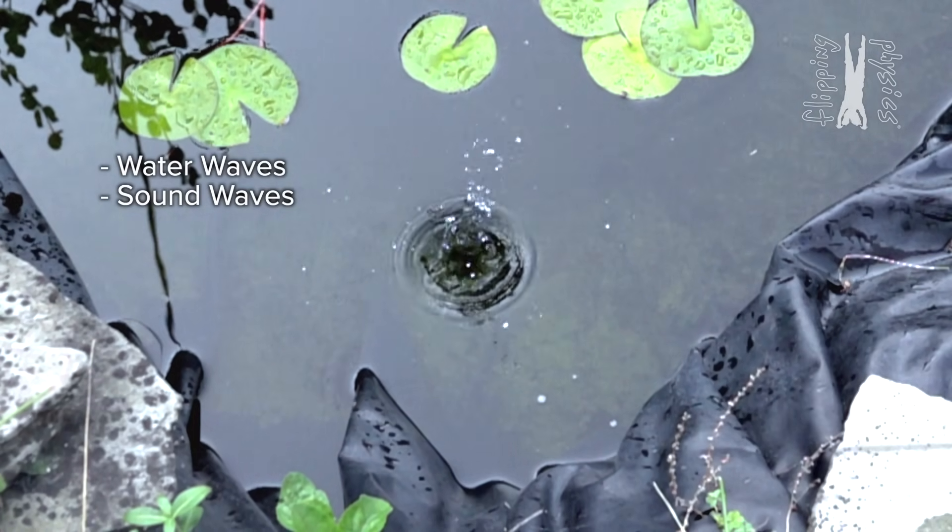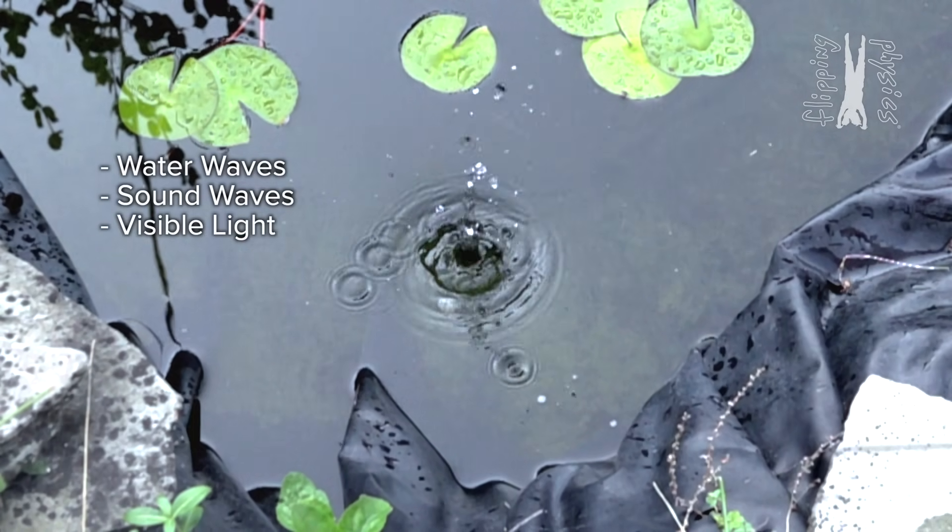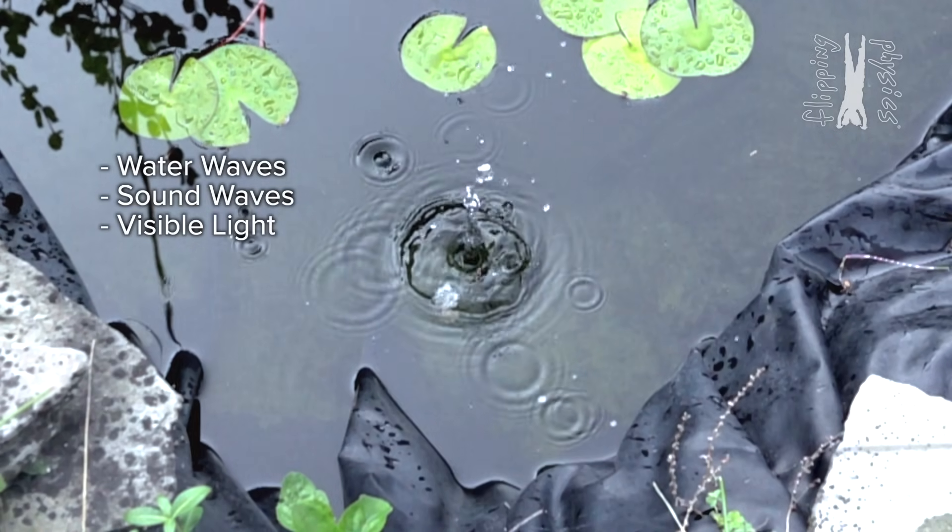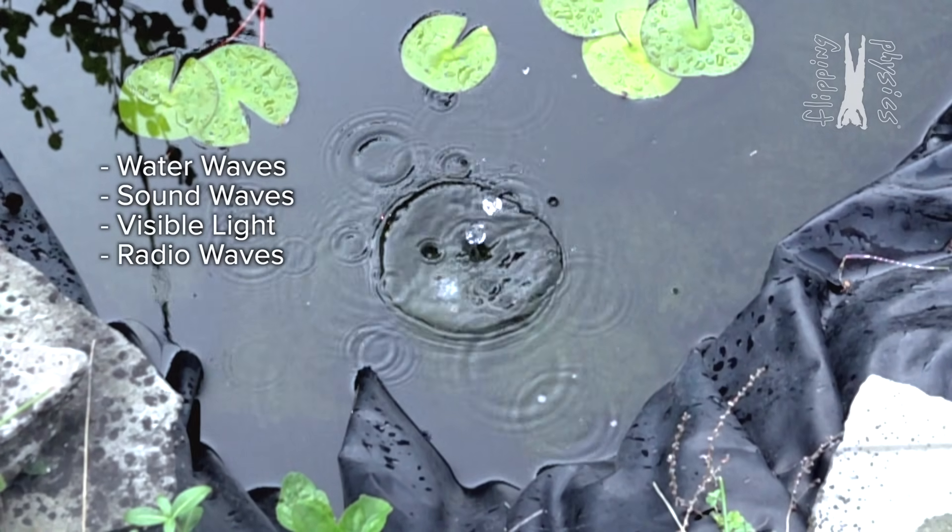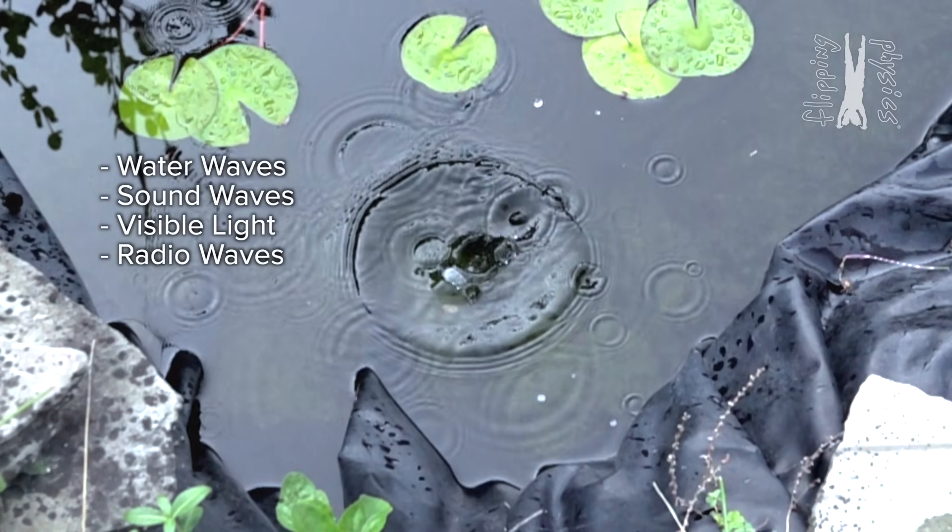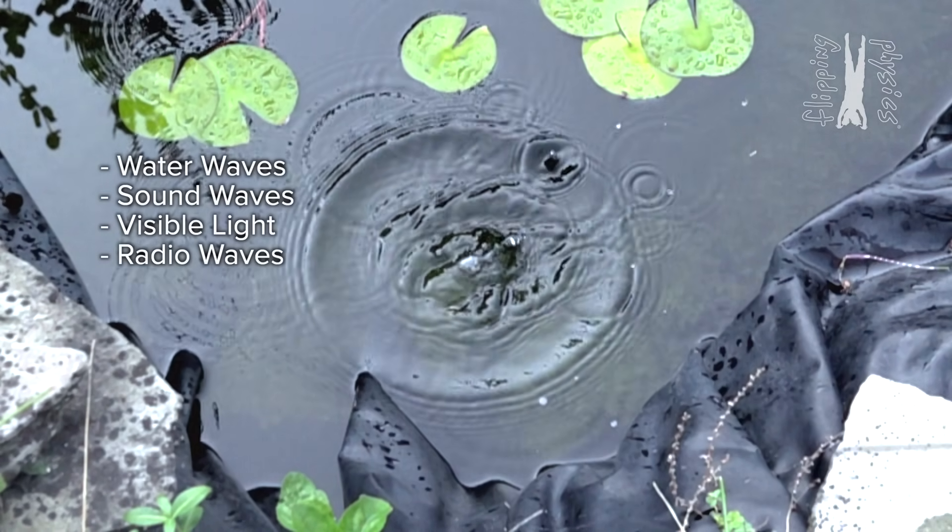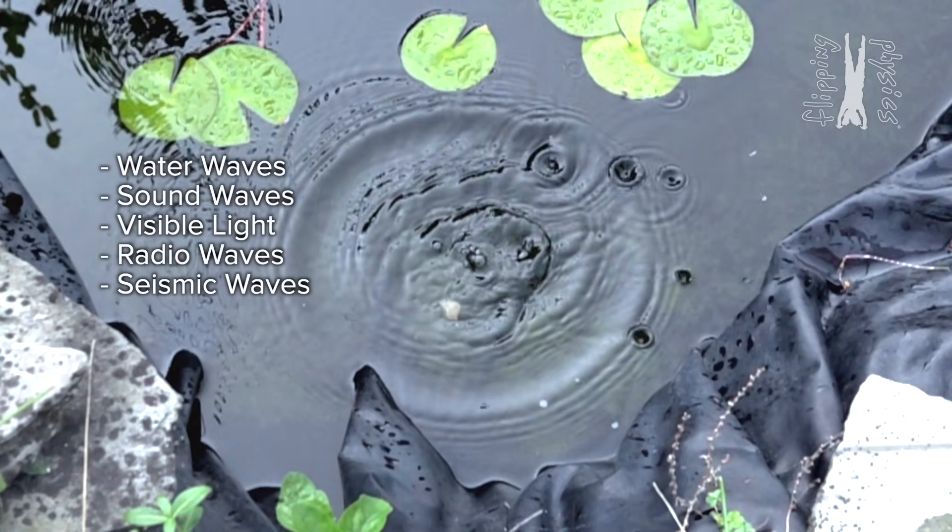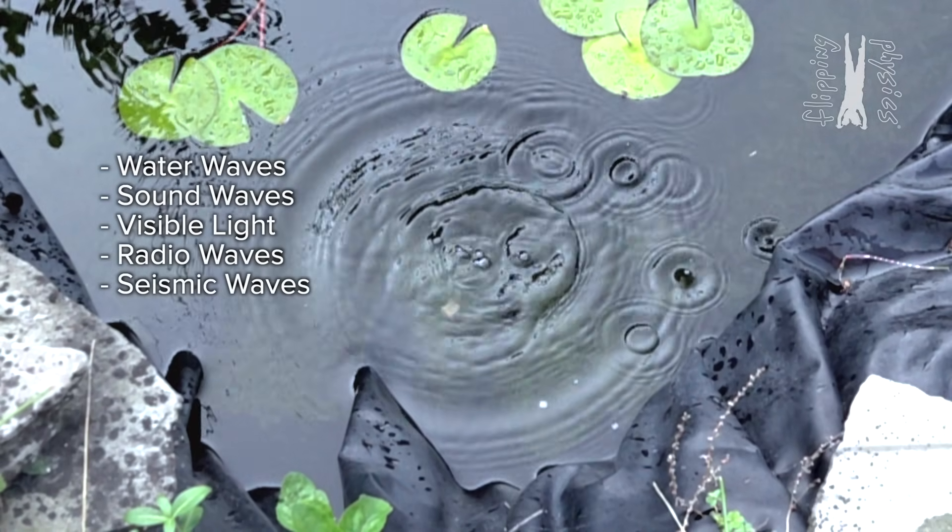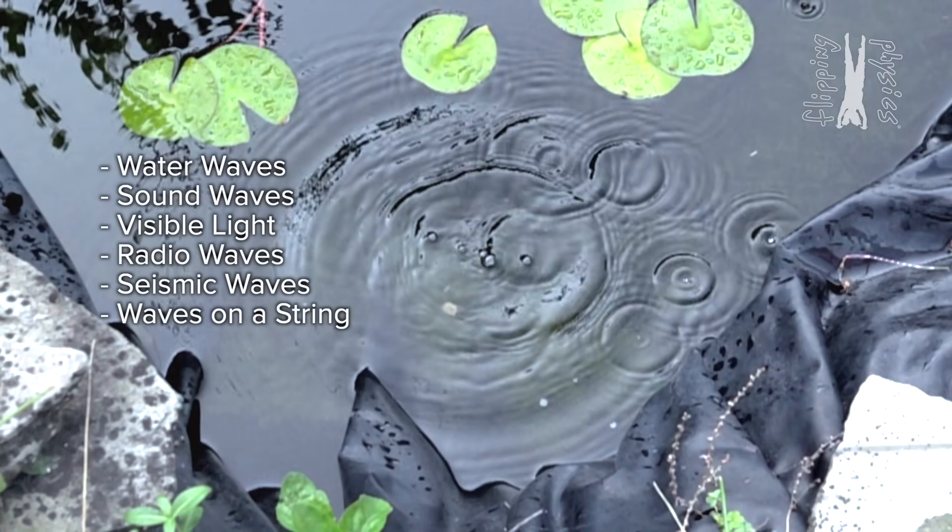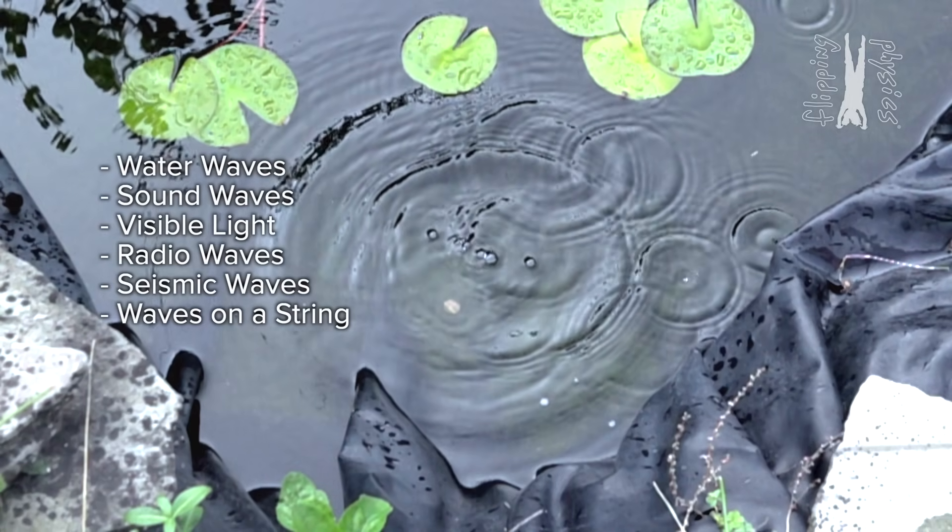Sound waves are how you are hearing me. Visible light is an electromagnetic wave and is how you see me. Radio waves are also an electromagnetic wave and are likely how your electronic device is receiving this video. Seismic waves are waves of energy which travel through the earth and waves on a string are elastic potential energy stored in a string.